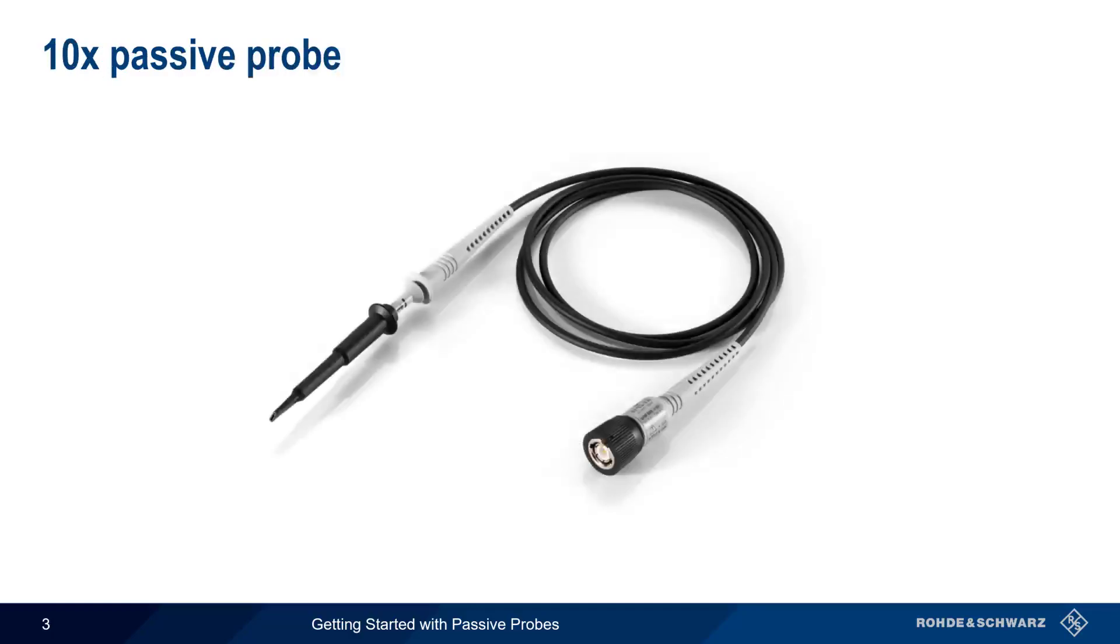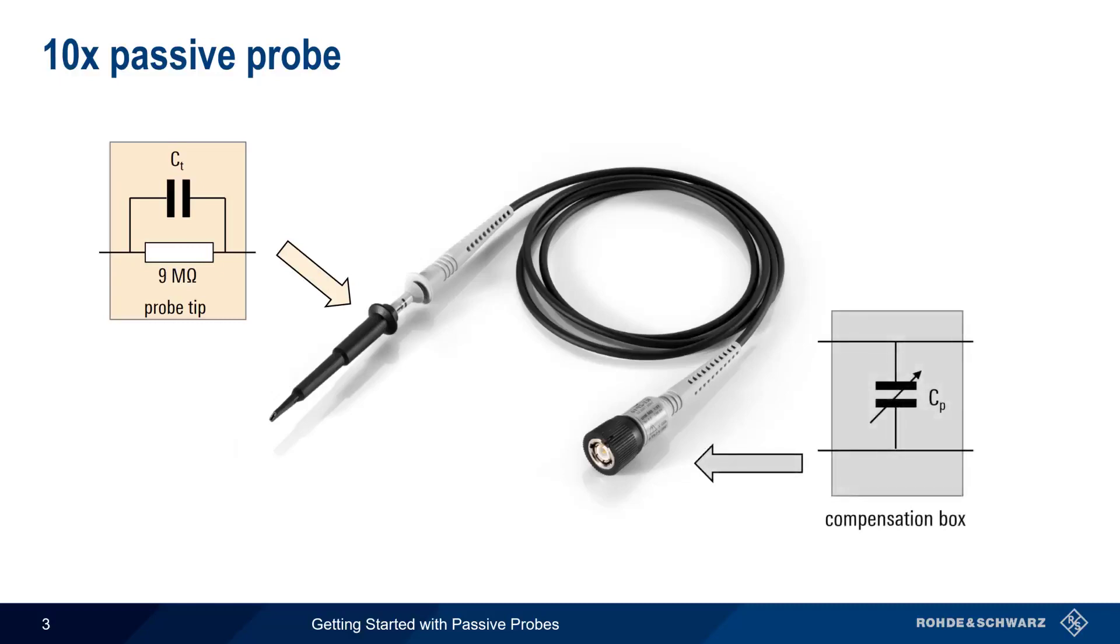Let's start by reviewing a simple 10x passive probe. As you should already know, a 10x probe has a probe tip containing both a 9 megaohm resistor and a fixed capacitor. It also has a variable capacitance in the compensation box near the scope attachment point. In addition, there's a small metal pin near the scope attachment point, which lets the scope know that we're using a 10x probe. There is, however, one important piece missing from this picture.